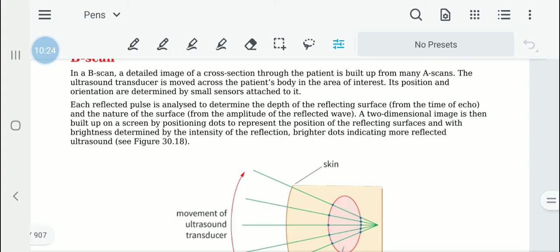B scan uses many A scans. A 2D image is built up on a screen by positioning the dots to represent the position of the reflecting surface.